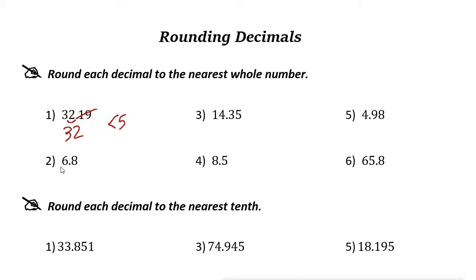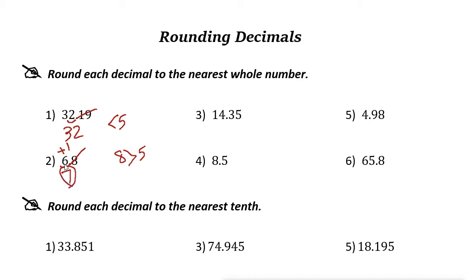Next one: 6.8. We want to round it to the nearest whole number. The whole number digit is 6. The digit on the right side is 8, and 8 is bigger than 5, so we need to add 1 to 6. Add 1, you get 7, then remove all digits on the right side. So the answer is 7 — 6.8 rounded to the whole number is 7.